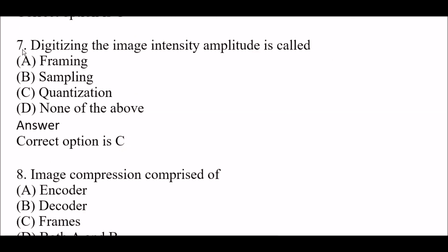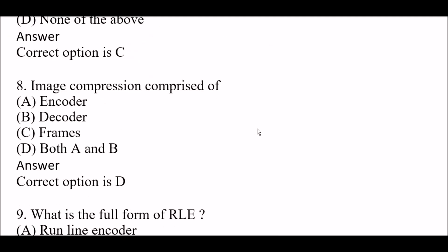Next question: Digitizing the image intensity amplitude is called — Option A: framing, Option B: sampling, Option C: quantization, Option D: none of the above. The right answer is Option C, quantization. Digitizing the image intensity amplitude is called quantization.